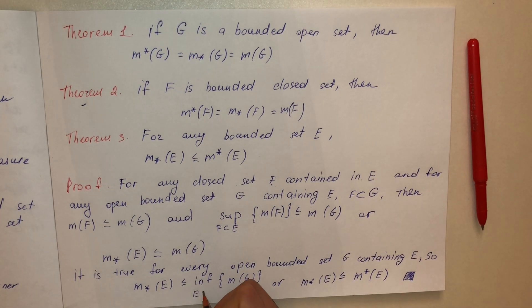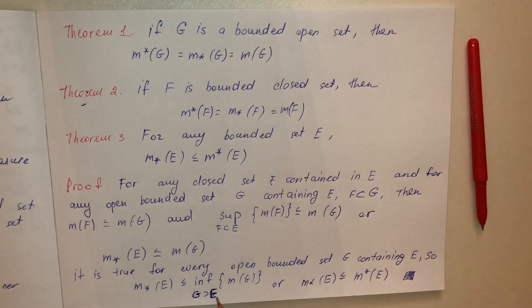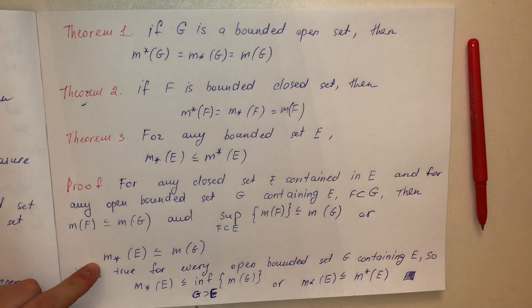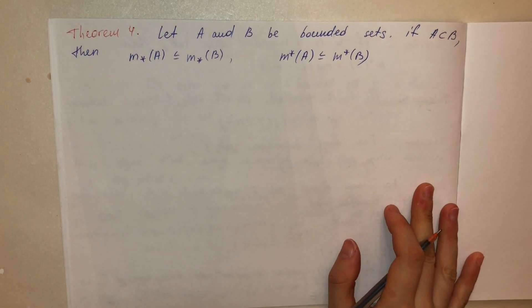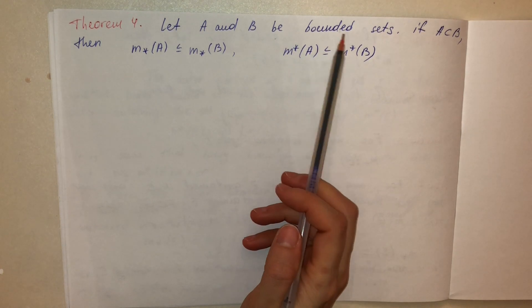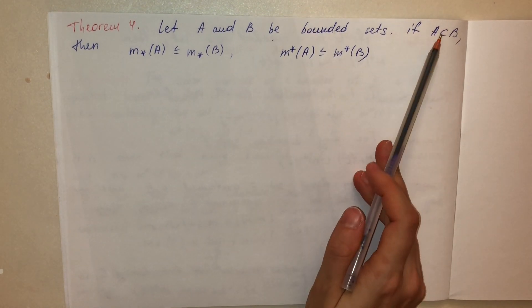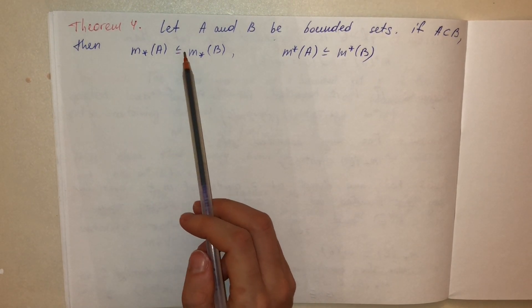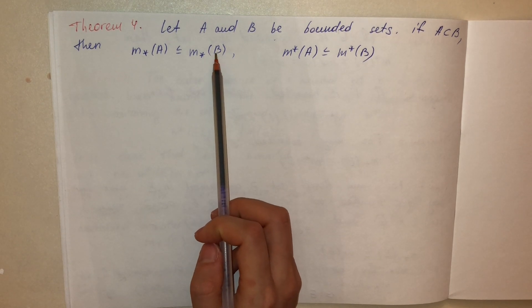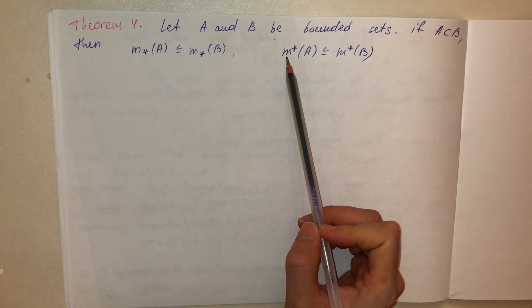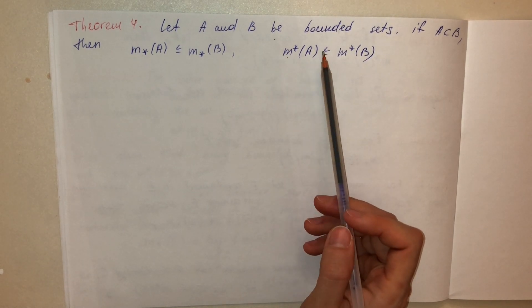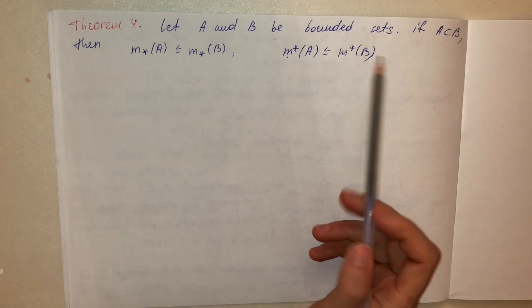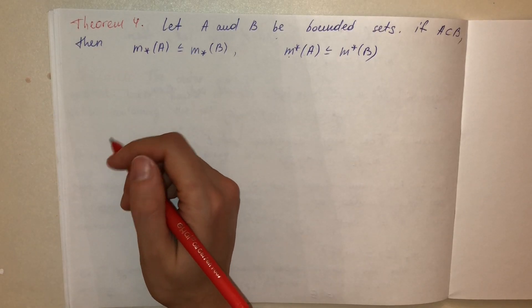Theorem 4: Let A and B be bounded sets. If A is a subset of B, then the inner measure of A is always less than or equal to the inner measure of B, and the outer measure of A is always less than or equal to the outer measure of B.